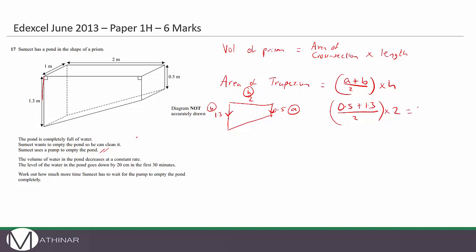So that gives us (0.5 + 1.3) divided by 2 multiplied by 2, which equals 1.8 meters squared. That's the area of the trapezium or the cross-section. So the volume of the prism is 1.8 multiplied by the length, giving 1.8 meters cubed.